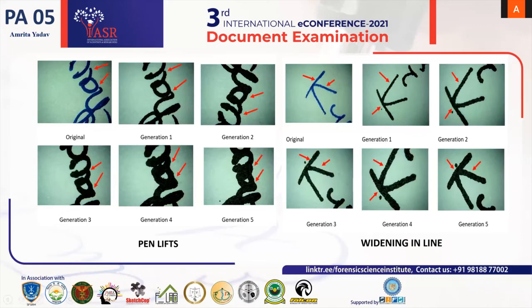Tremor can be detected up to the fifth generation, but it is sometimes misinterpreted as a hesitation mark. The next feature is pen lift, which is an interruption in the stroke due to removal of the writing instrument from the writing surface. A break is found in the feature, as seen in the original sample, but in generation one, due to deposition of ink, the break gets filled and identification becomes difficult.